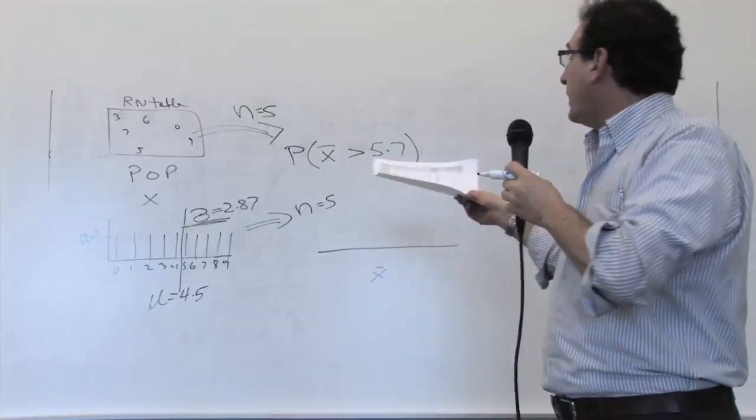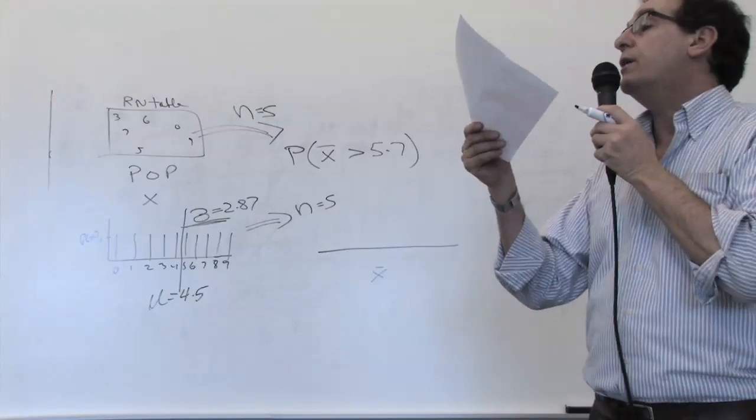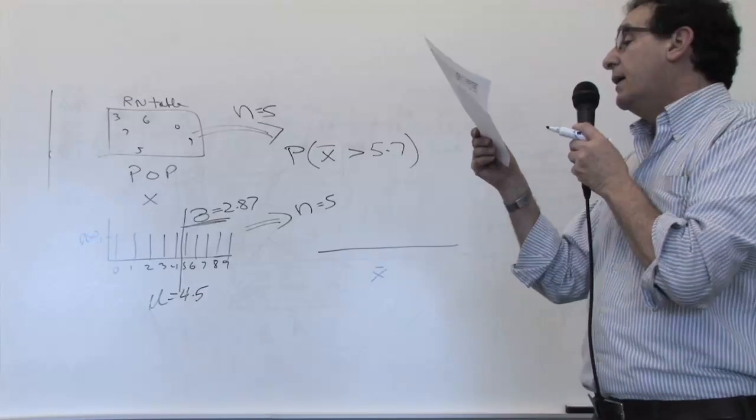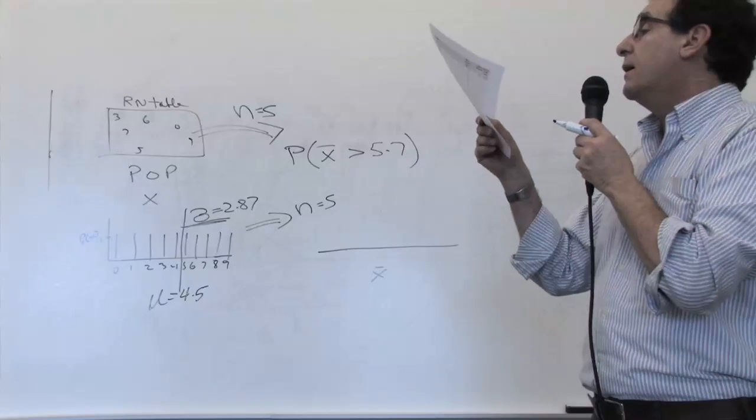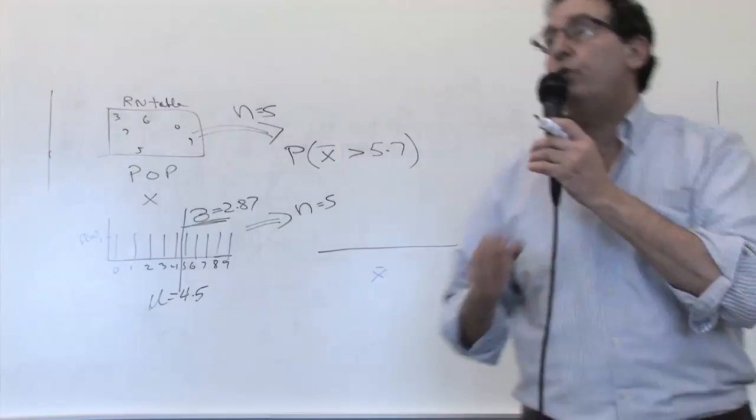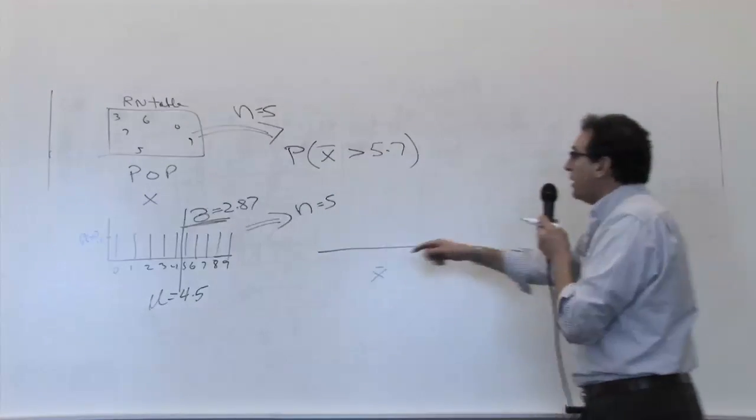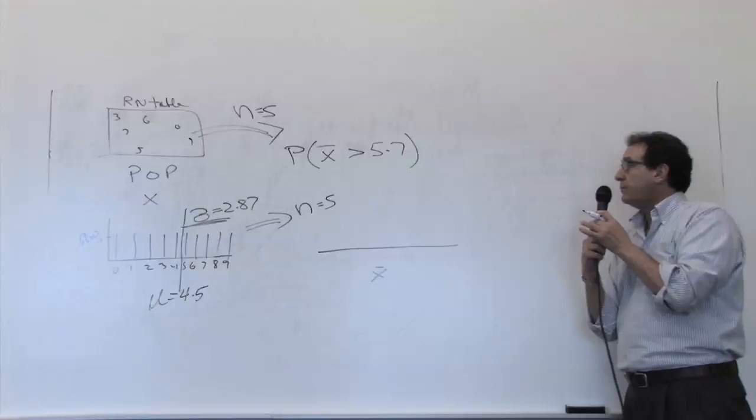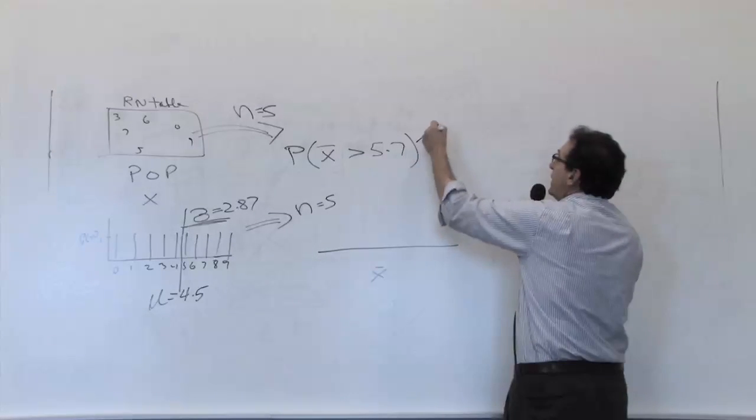How often do you get an x-bar bigger than 5.7? Well, sometimes you get like she got here, a 6.8, a 6.6, a 6.4, a 6.2. On occasion you do get numbers bigger than 5.7. Most of the time you get something close to 4.5, which is a true average, but sometimes you get it bigger. So the question is, how often do you get it bigger?